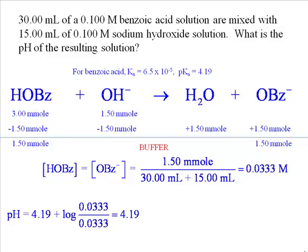This is something really important to memorize. Another way to think about it: we've done a half titration. To fully titrate the benzoic acid we would need 3 millimoles of sodium hydroxide, but we've added exactly half that. This gives us a one-to-one buffer. So at the half equivalence point of a titration, pH equals pKa.